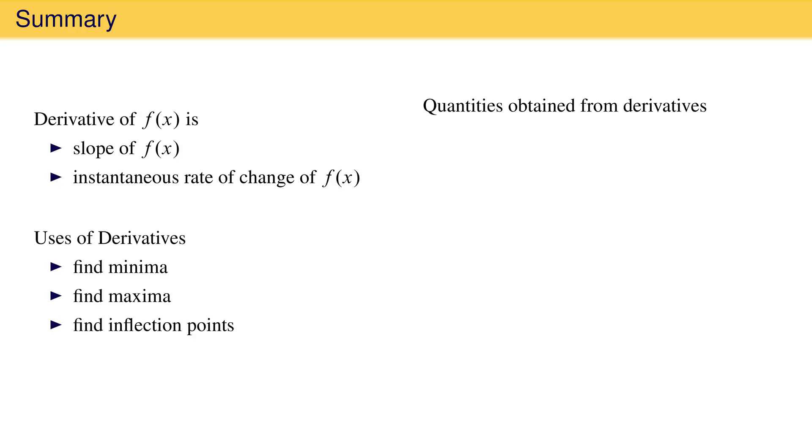Whether you know it or not, you have already dealt with physical quantities obtained from derivatives. Some examples include velocity, which is the derivative of position with respect to time, acceleration, which is the derivative of velocity with respect to time, and heat capacity, which is the derivative of enthalpy with respect to temperature.